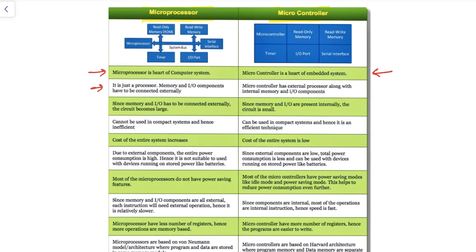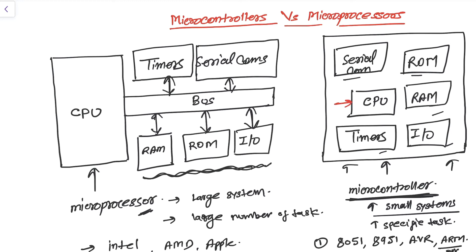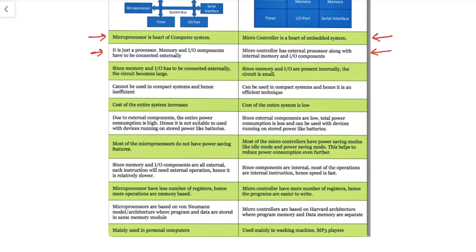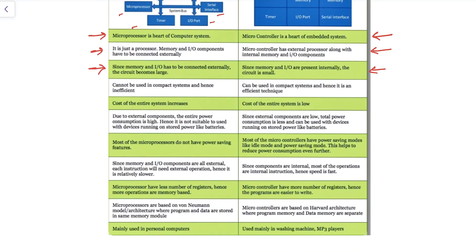In a microprocessor you have to add memory, input/output, and other peripherals externally. In a microcontroller these peripherals are already manufactured together with the processor on one chip, making the circuit small. A microprocessor cannot be used in a compact system, is inefficient, and consumes more power, while a microcontroller consumes less power and is very efficient for small tasks.